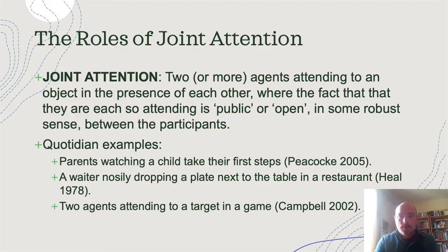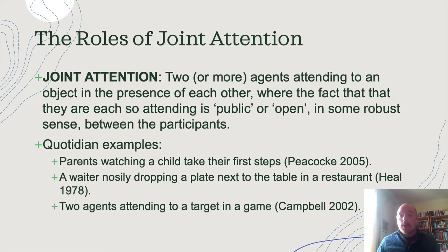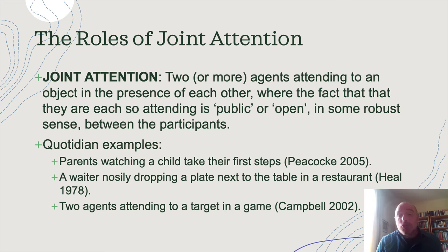Here is how I'm understanding joint attention — this is just an intuitive way of presenting it. Imagine a situation in which there are two or more agents attending to an object in the presence of each other, where the fact that they are each so attending is public or open in some robust sense between the participants. This is contrasted with a situation in which each person is just attending for themselves and is oblivious or unaware of the other person.